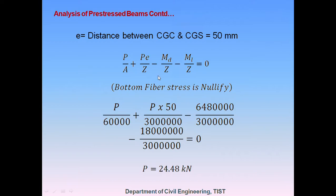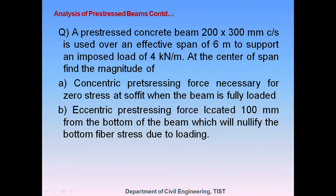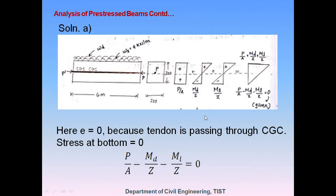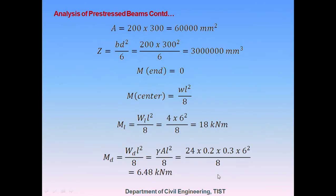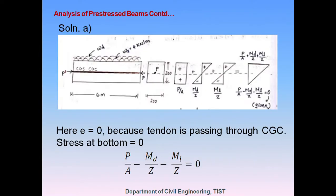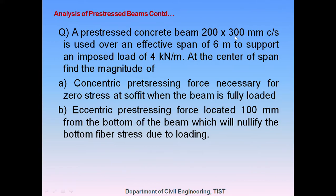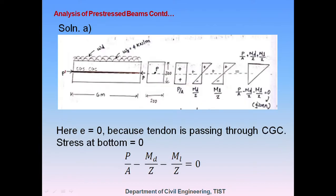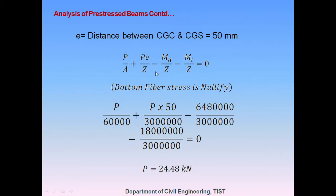We know A, Z, MD, and ML. The unknown is P, and we need to find E. Eccentricity is the distance between the center of gravity of concrete and steel. The total depth is 300 mm, so the CGC is at 150 mm from the bottom. The steel is located at 100 mm from the bottom. Therefore, eccentricity E = 150 − 100 = 50 mm. With E known, P can be calculated as 24.48 kN.